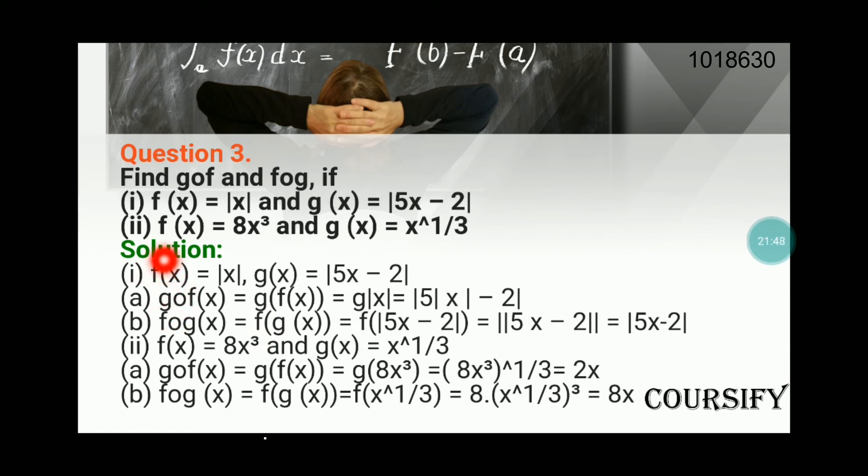The second part: f(x) = 8x³ and g(x) = x^(1/3), which is the cube root. First we find g(f(x)). So f(x) is 8x³, and then we feed it to g. What does g do? Whatever value is fed to it, it takes out the cube root. So cube root of 8x³ gives us 2x.